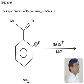The major product is asked and the options are given in which F is replaced, Br is replaced, or both are replaced. On top of that, one more point to consider is that if Br is replaced, will it be an inverted substitution or will it be retention in the substitution taking place?